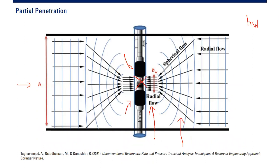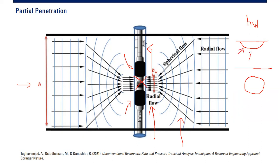After radial flow, due to partial penetration, you will have spherical flow. If your perforation is at the center between the top and bottom of the reservoir, you will have spherical flow. But if your perforation interval is closer to the top, you will have hemispherical flow instead. Spherical flow — if you make a 3D shape of it — looks like a ball, while hemispherical flow looks like half a ball.